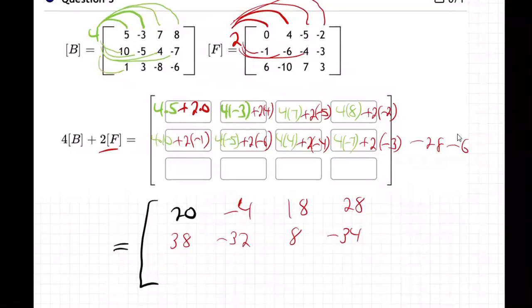Last row. Four times one and then two times six. Four plus 12, that's 16.